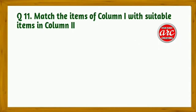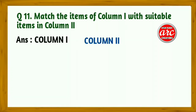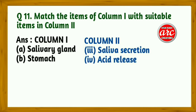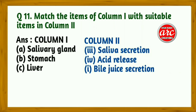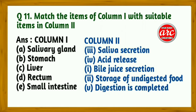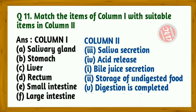Question 11: Match the items of Column 1 with suitable items in Column 2. Answer: salivary gland → saliva secretion; stomach → acid release; liver → bile juice secretion; rectum → storage of undigested food; small intestine → digestion is completed; large intestine → absorption of water.